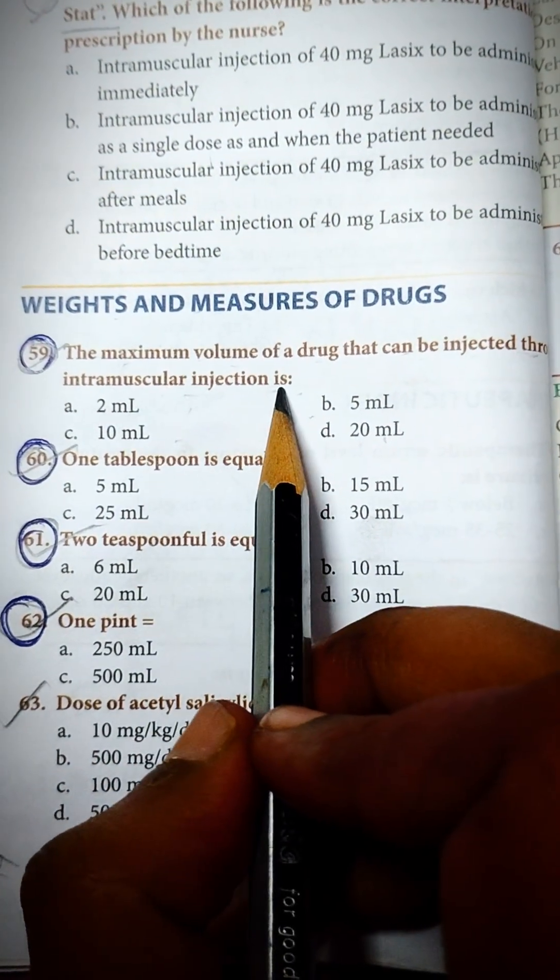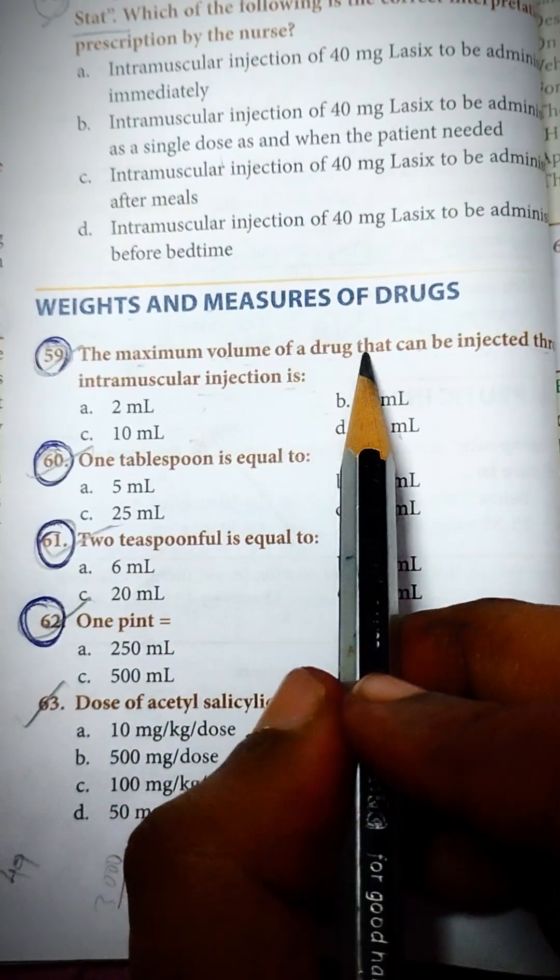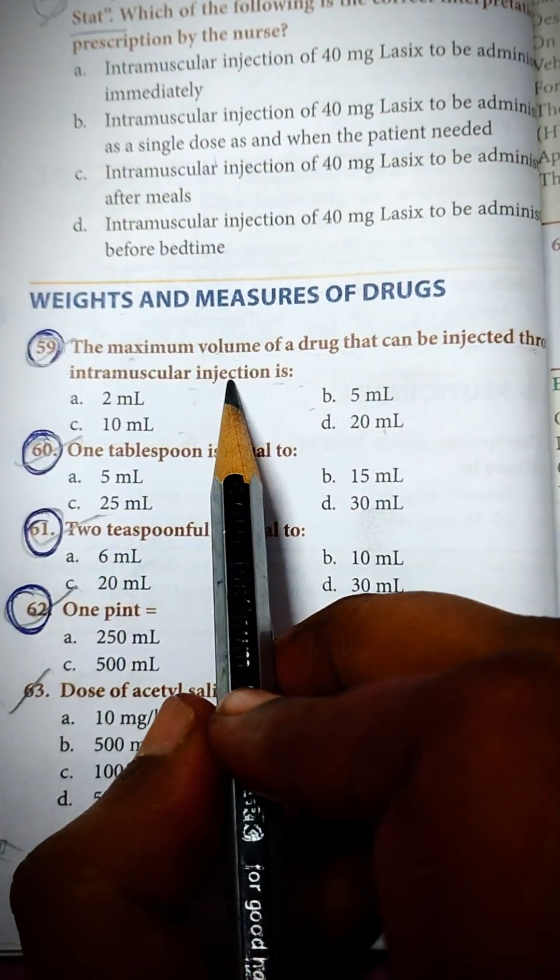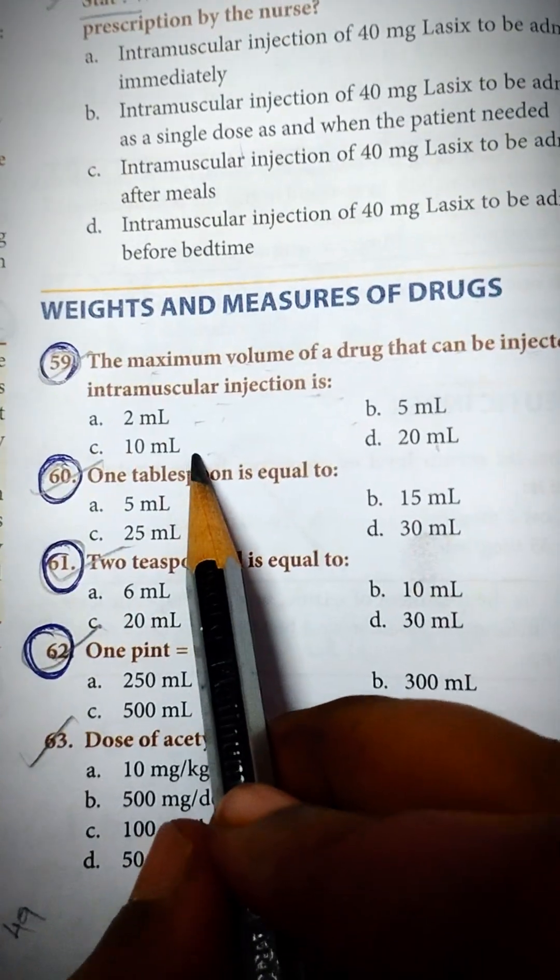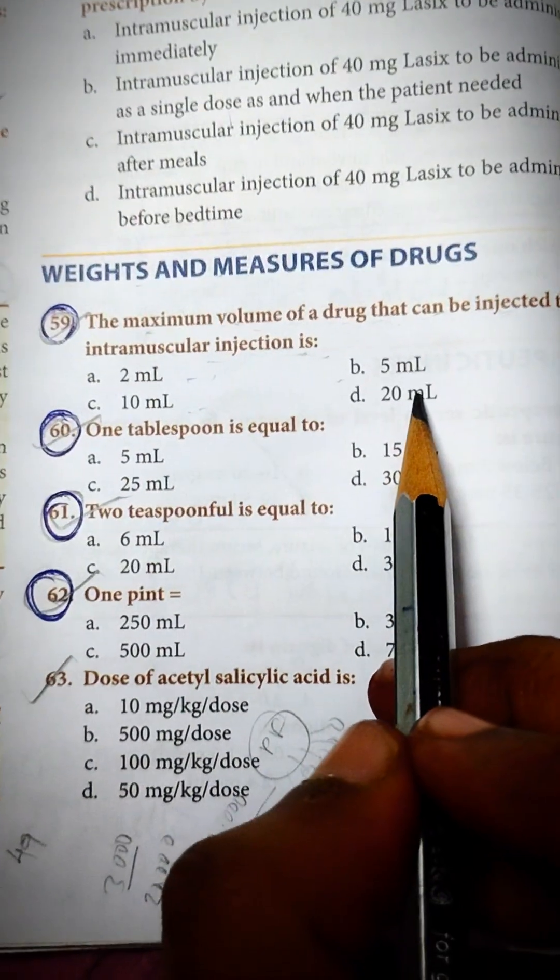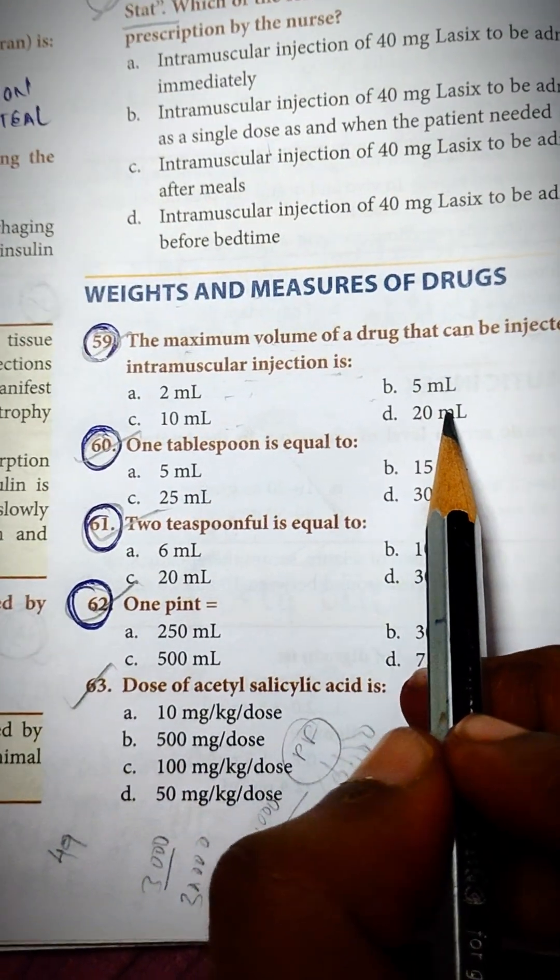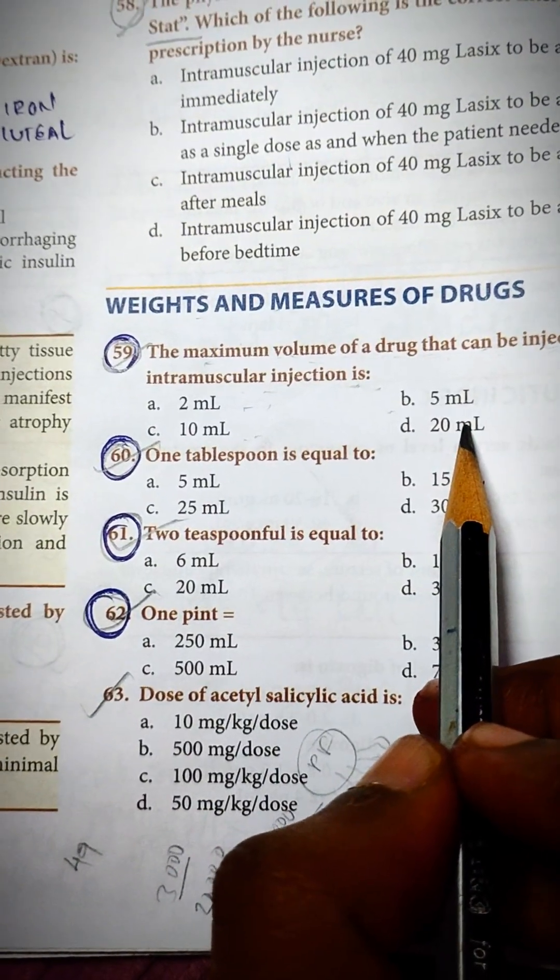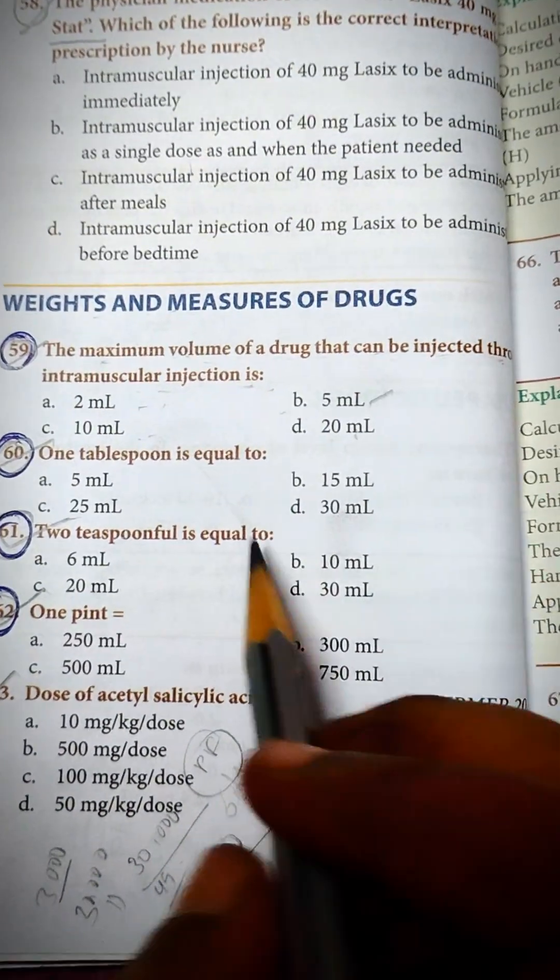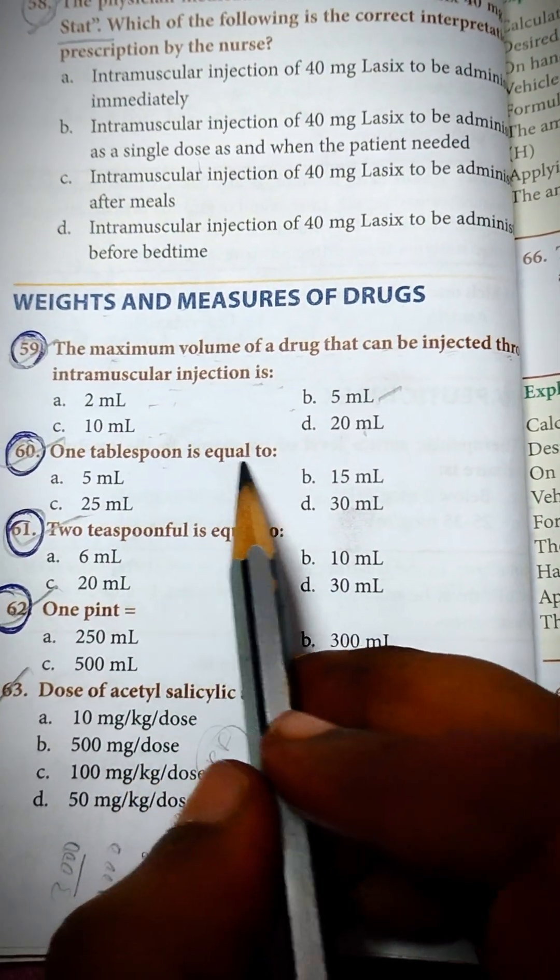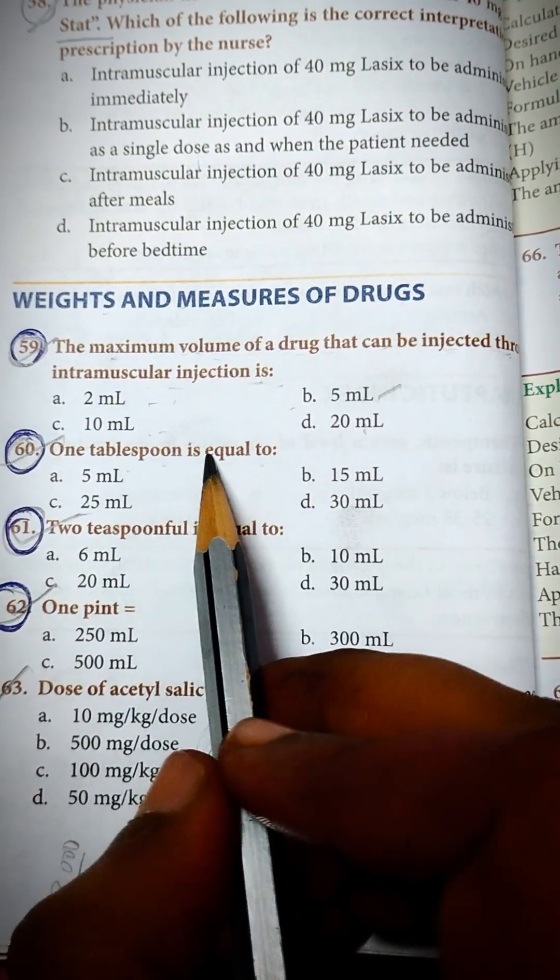to intramuscular injection is - the maximum value of drug that can be injected to intramuscular injection is: 2 ml, 5 ml, 10 ml, and option d 20 ml. The answer is 5 ml. Then, 1 tablespoon is equal to